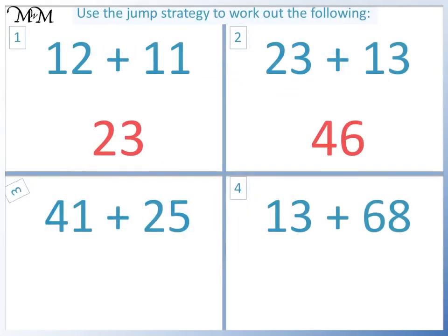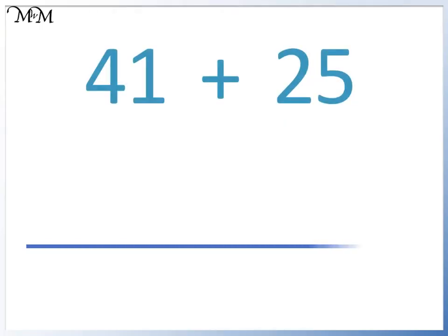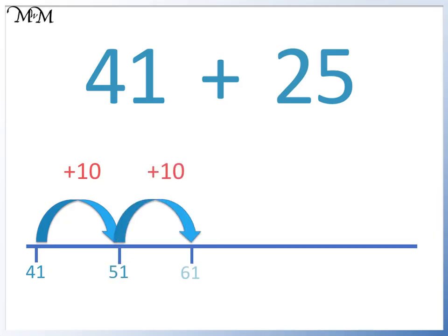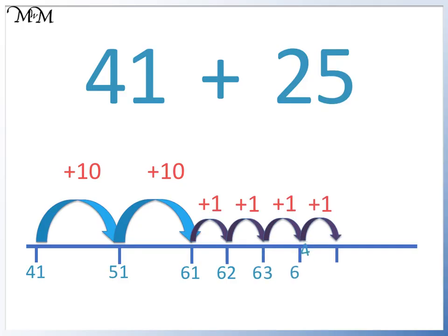Question 3. We add 2 tens to get to 51, and then 61. We add 5 ones to get to 62, 63, 64, 65, and 66.